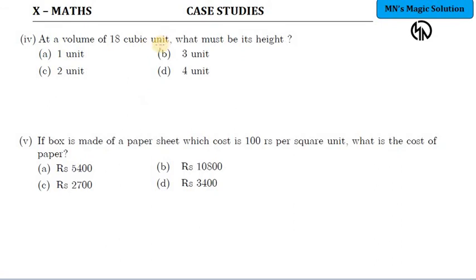At a volume of 18 cubic units, what must be its height? For 18 cubic units volume, breadth or width x equals 3 as we just identified. And you know h is nothing but x minus 2. So what is 3 minus 2? It will be 1 unit. Answer is option A, 1 unit.